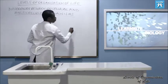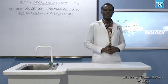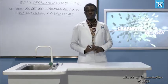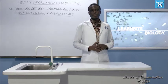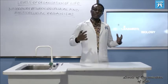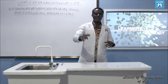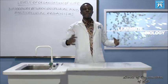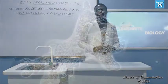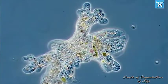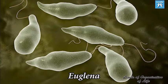What is a unicellular organism? It is an organism — an individual — that is made up of only one cell, which can perform all life activities. Examples include amoeba, paramecium, euglena, and chlamydomonas.